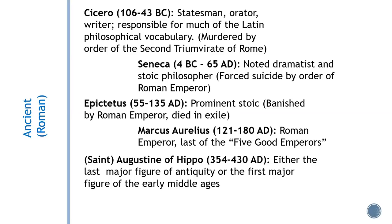Domitian actually banished all philosophers from Rome. People who can think for themselves are often big trouble for autocrats and tyrants, and Domitian was certainly one of those. Again, everybody hates the moral philosophers, so their lives aren't that easy.